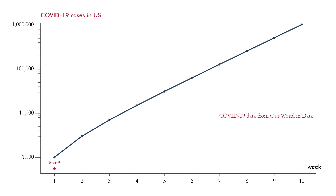The first dot is on March 9th — there were 554 confirmed cases. It was also the day of the Rudy Gobert incident. In a press conference, the NBA star joked about COVID-19 by touching every microphone and recorder. Two days later, he came down with the disease and the NBA suspended its season. Each data point shows the number of confirmed COVID-19 cases in the United States after another week, matched up with the money problem timeline. The data shows two different growth rates: through March the cases grew rapidly, and at a lower rate through April.